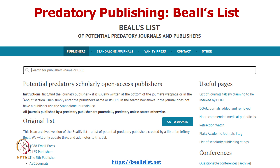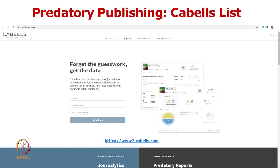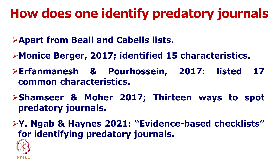Beall's list and Cabell's list are important websites providing information on predatory journals. Multiple researchers have identified characteristics to spot them: Monish Berger 2017 identified 15 characteristics; Irfan, Manish, and Porhausen 2017 listed 17 common characteristics; Samseer and Mohar 2017 identified 13 ways to spot predatory journals; and Nagav and Hainz 2021 published an evidence-based checklist for identifying predatory journals.